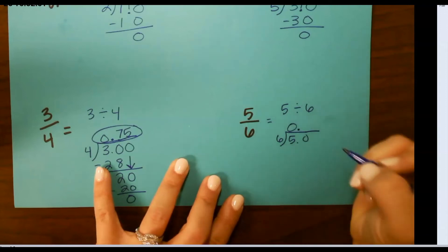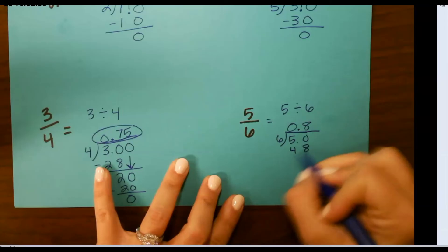6 goes into 50 8 times. 8 times 6 is 48. Subtract and that will give me 2.